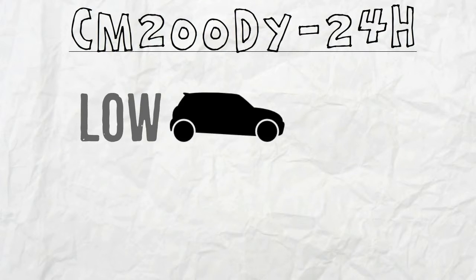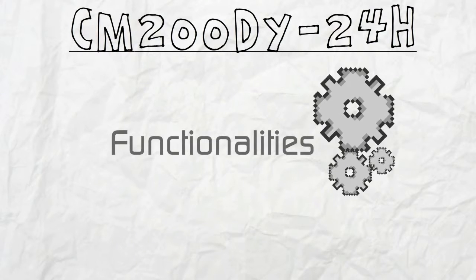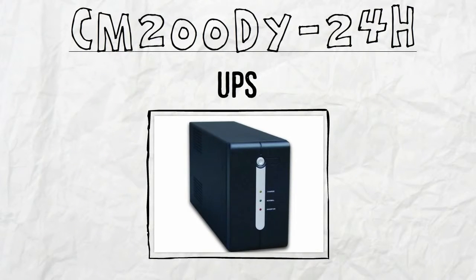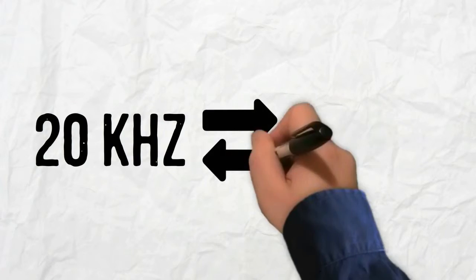CM200DY24H also has low drive power and low VCE sat to enable the best functionality of the UPS. It is apt for high frequency operation, which can range between 20 and 25 kilohertz.